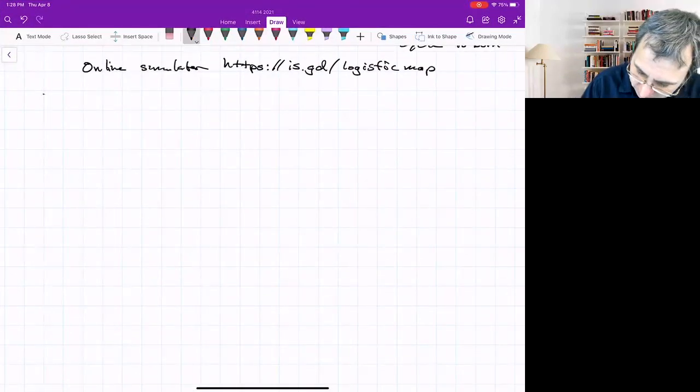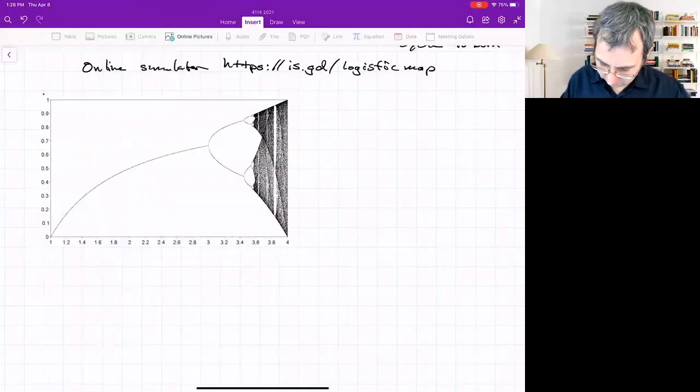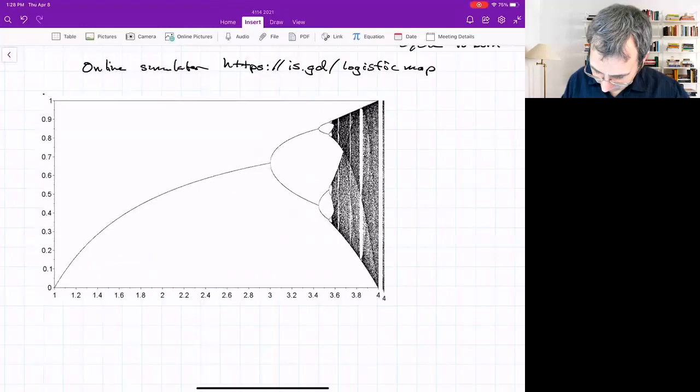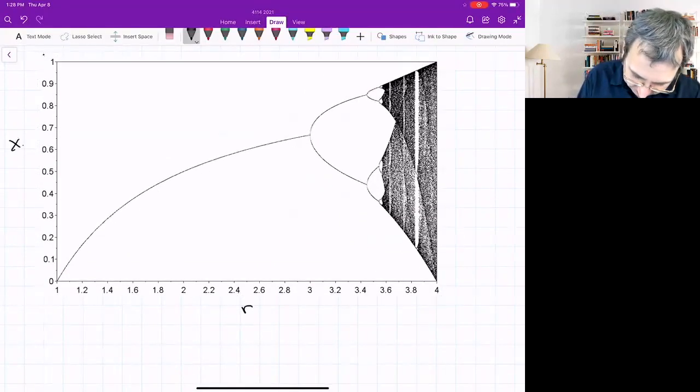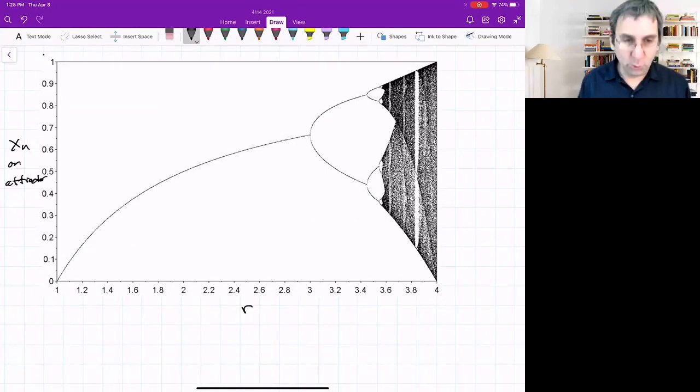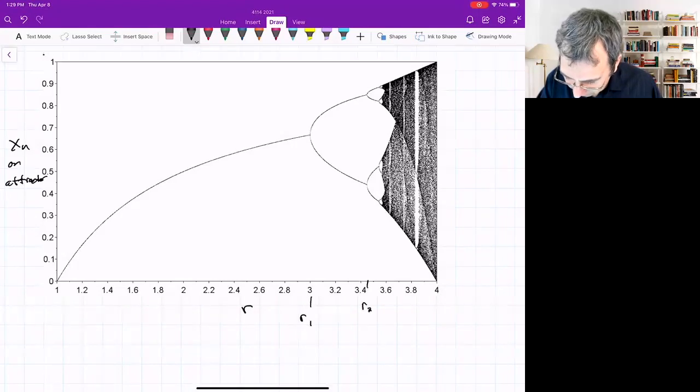So here's an actual bifurcation diagram. Well, not actually, it's numerically calculated. Looks better than my hand-drawn thing. Most of it's boring. So this is r and this is xn on the attractor. Before r equals one, the only attractor is zero. And then you get this branching. We call this r1 and then some over here is r2. And then wherever this is happening, r3.